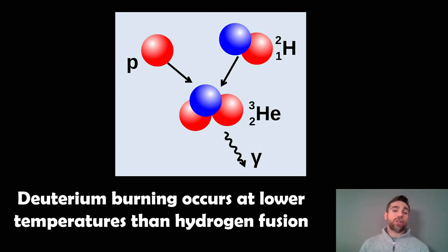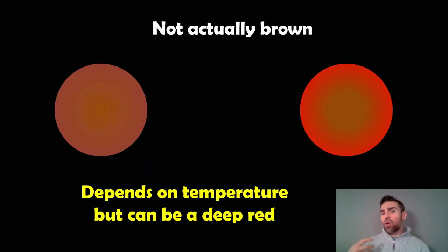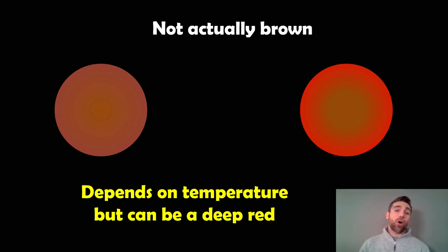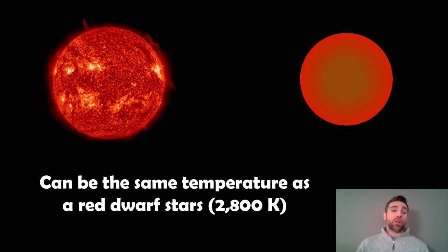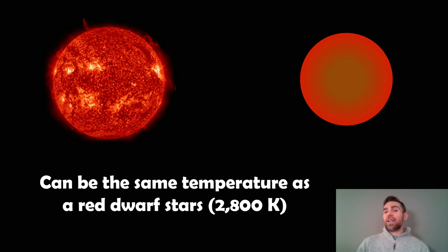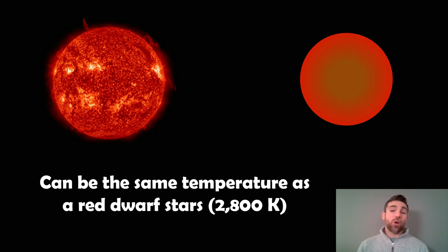Because deuterium burning happens at lower temperatures than hydrogen fusion, brown dwarfs are still able to be reasonably hot. And when we look at them, they're not actually brown — they're called brown dwarfs for a different reason. Their actual colour depends on how hot they are, but they can be a deep red, which is quite similar to some of the coolest stars we have. For example, red dwarf stars can be just below 3000 Kelvin surface temperature, and a brown dwarf can be the same temperature. The difference is their core temperatures: the brown dwarf has lower mass, so gravitational forces can't generate the hotter temperatures in its core needed to fuse hydrogen.